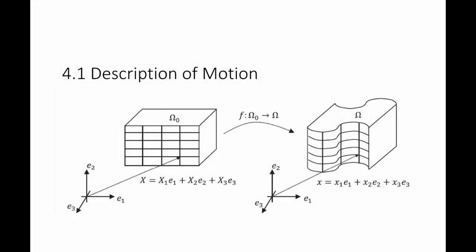As the object deforms, the position of its points changes, and the new position is usually denoted by the vector small x, which has components x1, x2, and x3. The deformed configuration is usually termed omega. There is a mapping function between omega naught and omega that shows where every point in the reference configuration is positioned in the deformed configuration. This mapping function is f, and it maps vectors in omega naught to vectors in omega.